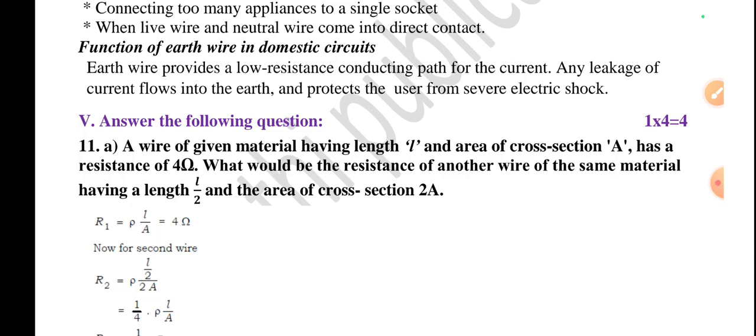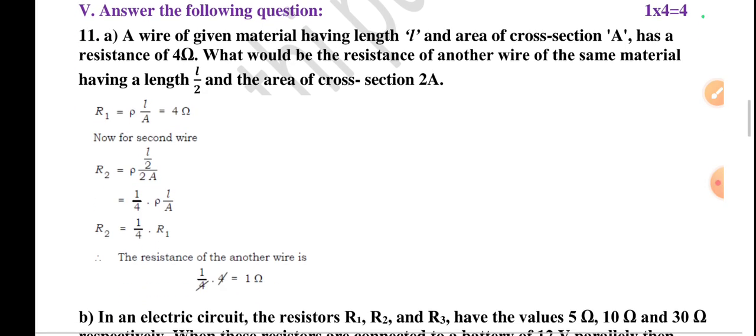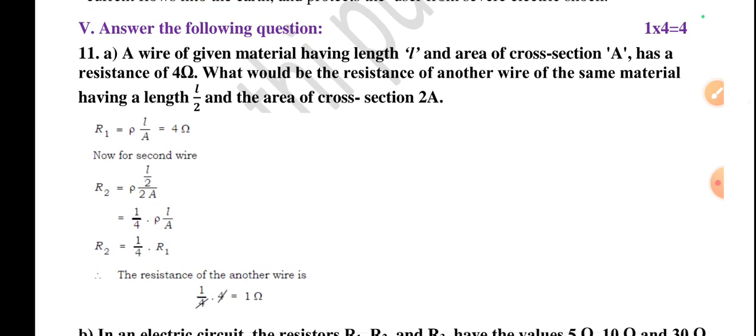Question number five section: Answer the following questions. It's a four mark question. It's a problem. A wire of a given material having length l and area of cross-section A has a resistance of 4 ohm. What would be the resistance of another wire of the same material having length l by 2 and area of cross-section 2A? This question is related to the concept - which concept? Resistance and area are inversely proportional, resistance and length are directly proportional. Based on that concept they've given this problem.